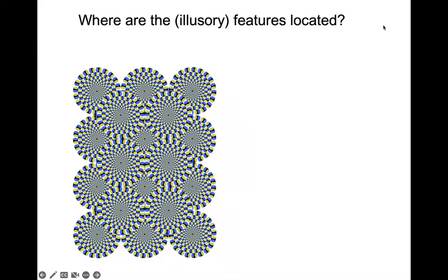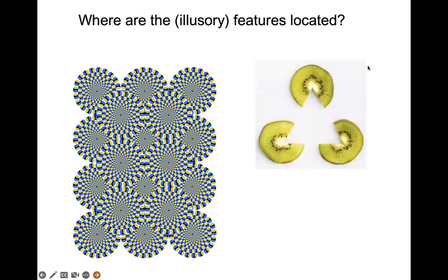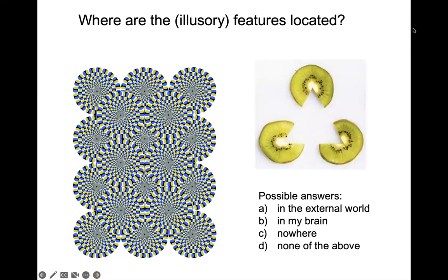So the first question for you: if you look at this illusion called the rotating snakes, an illusion by Kita Oka, the question is where are the illusory features located? Is this illusory feature of rotation in the external world? In the brain? Is it nowhere? Or is it none of the above?